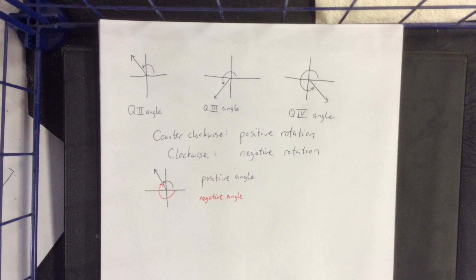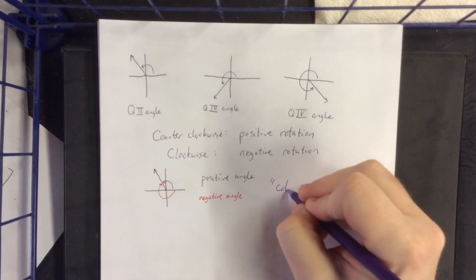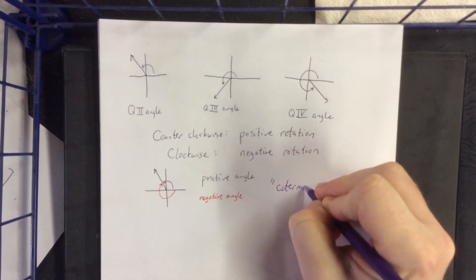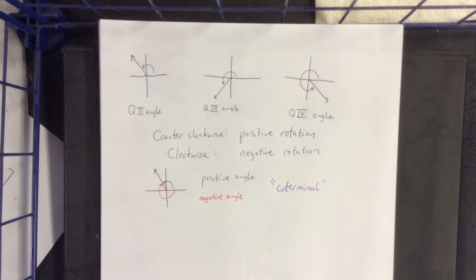However, regardless of whether we're using the positive angle or the negative angle, if they have both the same initial side as well as terminal side, we refer to these two angles as being coterminal. Prefix co meaning together. Terminal meaning that they terminate at the same direction. So, regardless of positive or negative, if they have the same initial side and they have the same terminal side, we refer to the angles as coterminal.